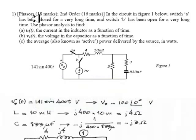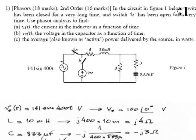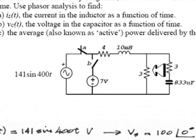The first question was on phasors and second order systems. In the circuit below this one, switch A has been closed for a very long time and switch B has been opened for a very long time.